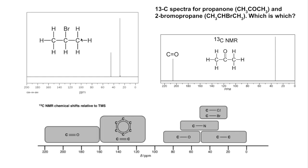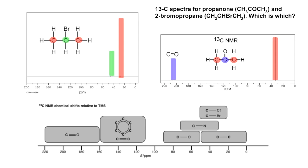You can see much more clearly now which carbons are equivalent. For propanone, the red peak is for the two CH3 carbons in a C–C environment, and the blue peak is for the C=O carbon. For 2-bromopropane, one peak is for the two equivalent CH3 carbons, and the green peak is for the carbon bonded to the bromine.